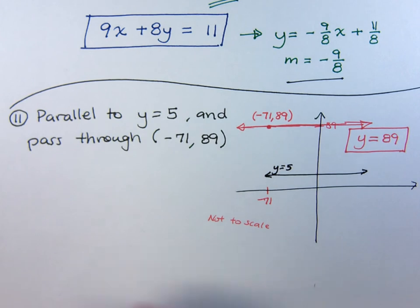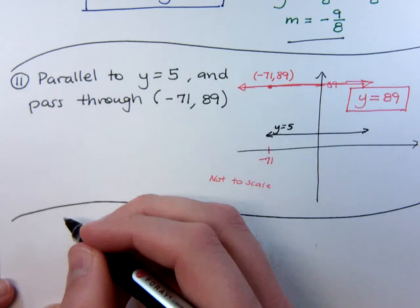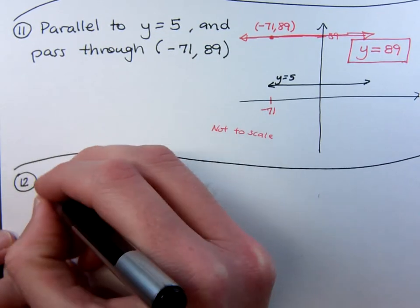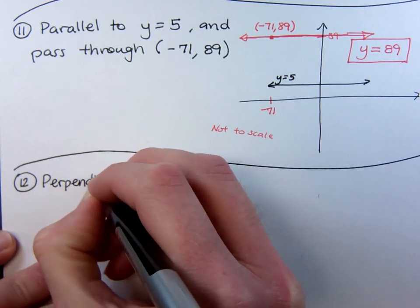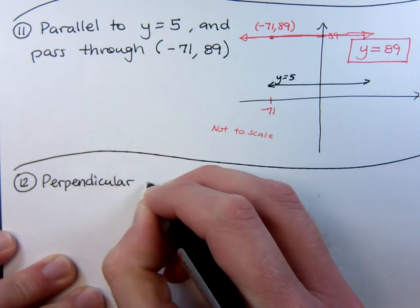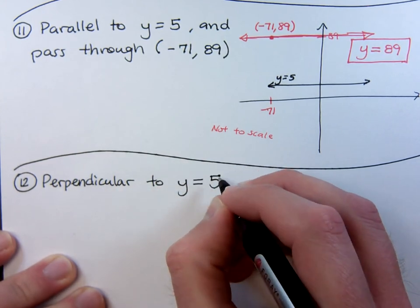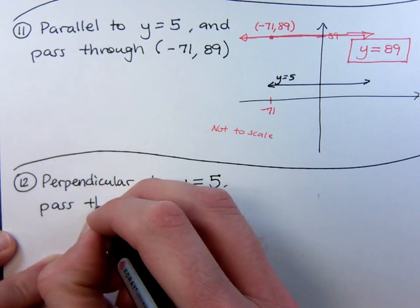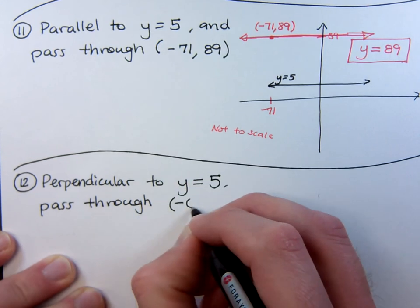All right. One more. We'll finish up the section here about writing equations of lines. What if I say that I want to be perpendicular to that same line y equals 5. And then I want to pass through the point negative 6, negative 4.